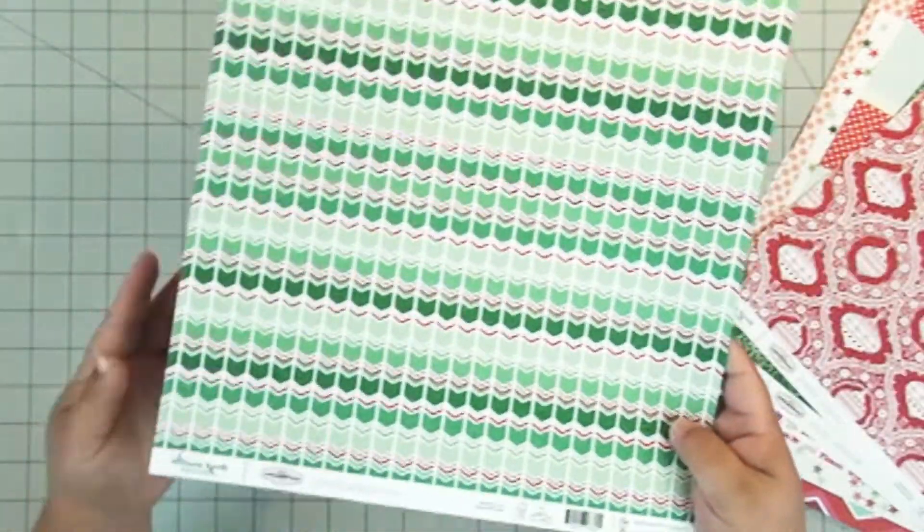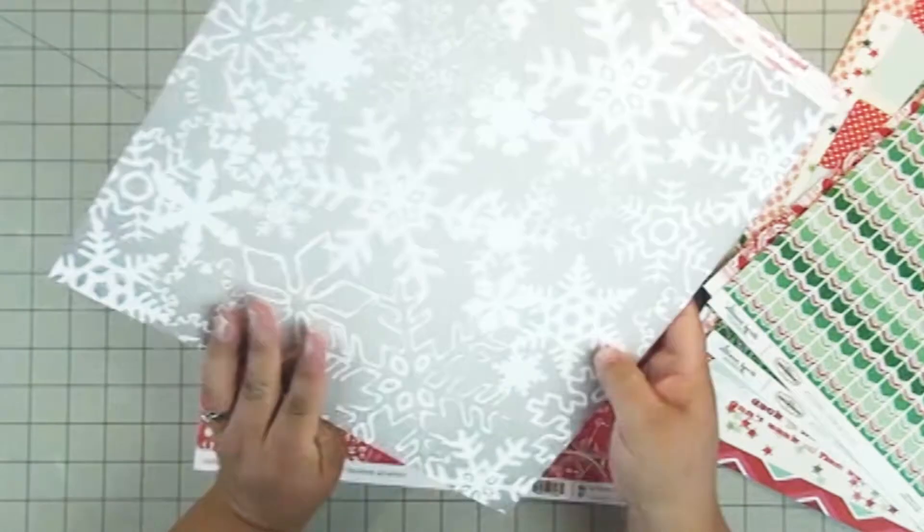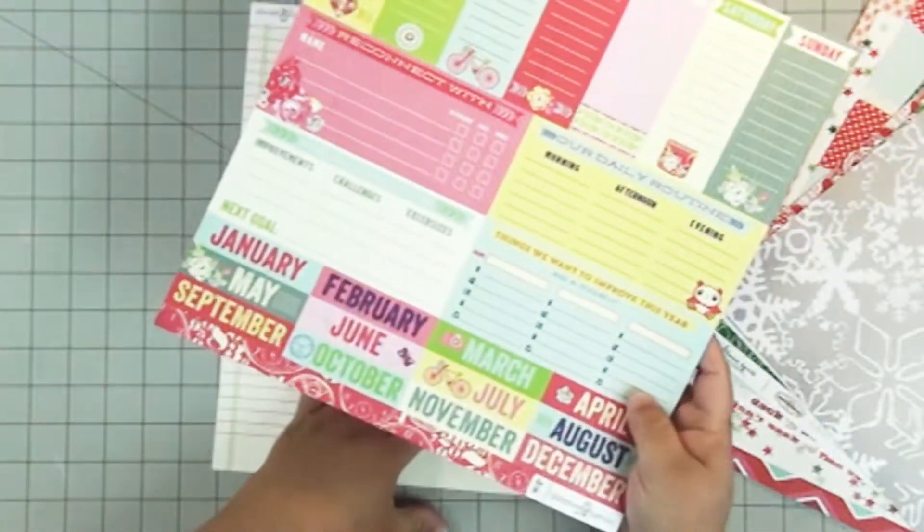And there's two sheets of different cutouts here in this kit. So you can cut those apart and use them for journaling. Or you can make scrapbook pages. Lots of possibilities.